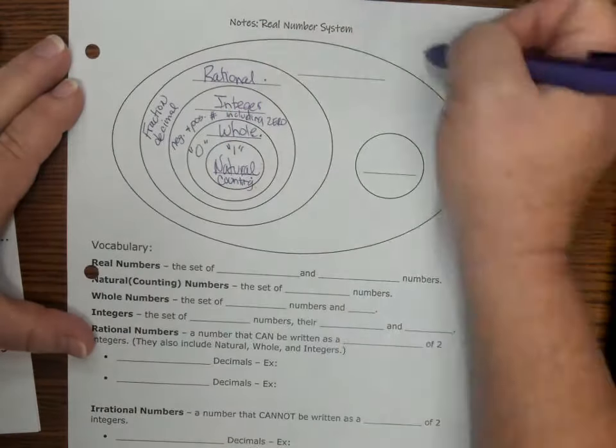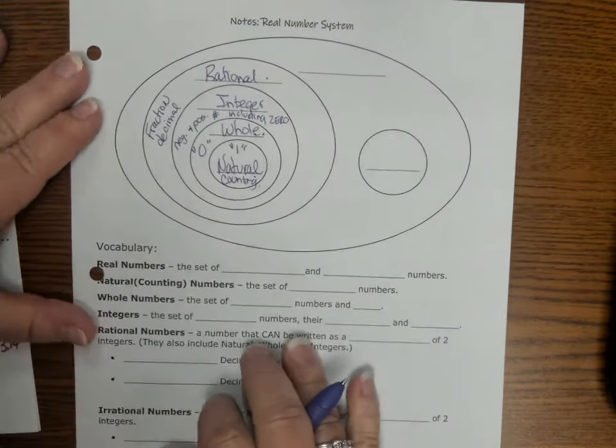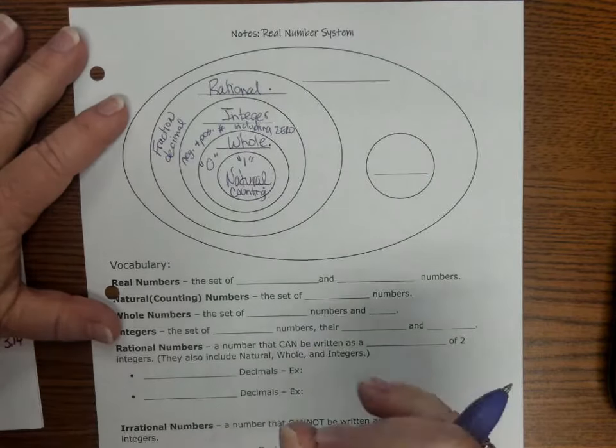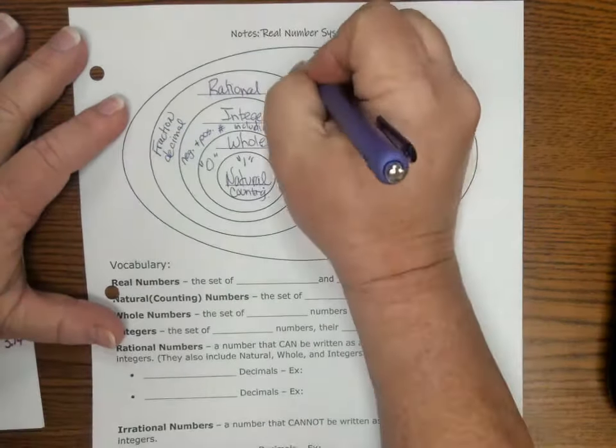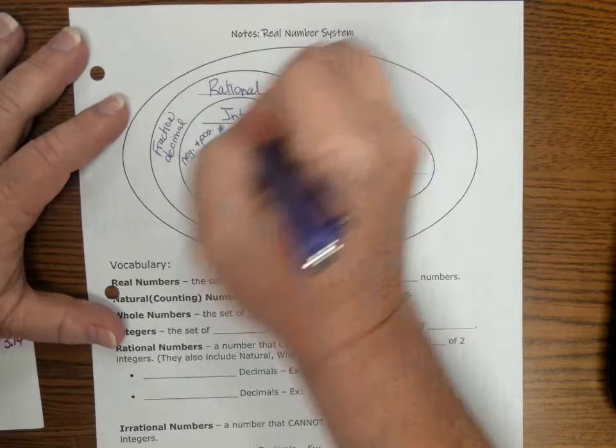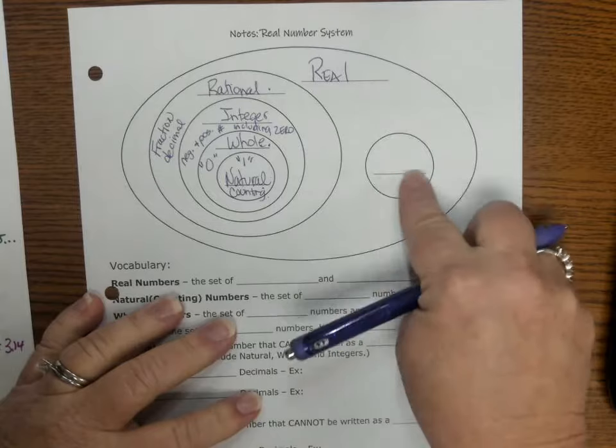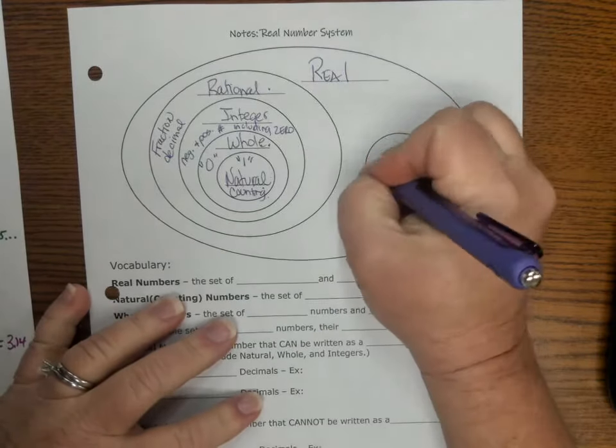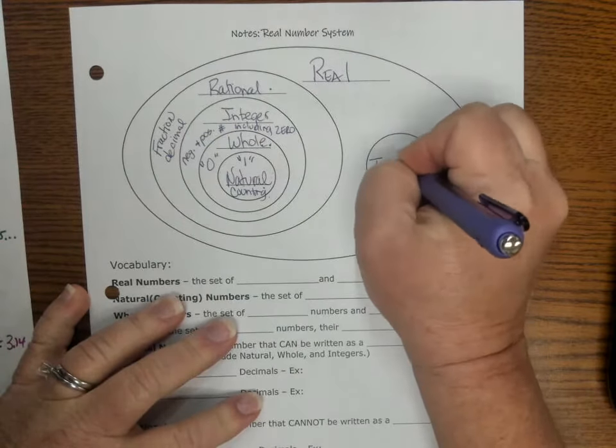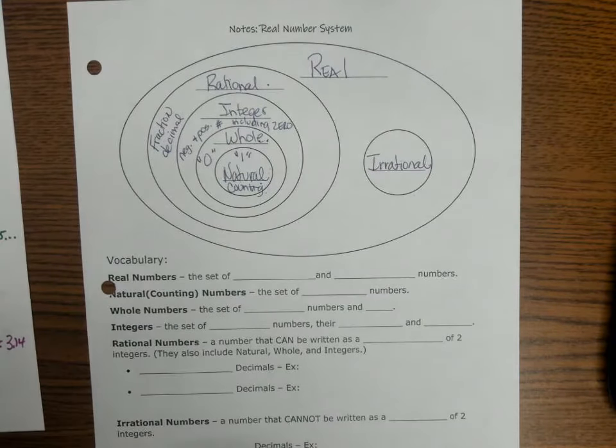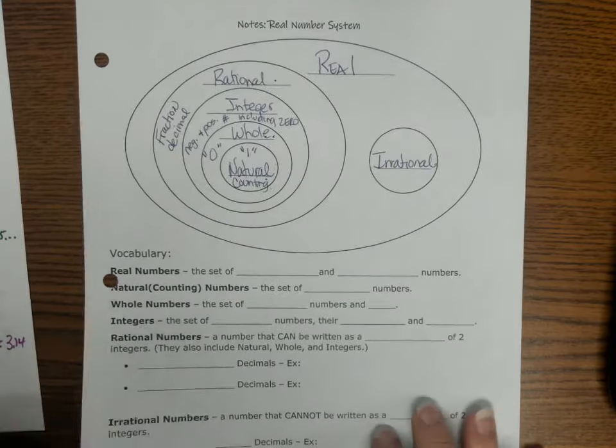All the numbers that you're going to know about in eighth grade, and until you get to Algebra 2, you'll find out there's imaginary numbers, are called the real number system. And this year, you get to learn about this set of numbers over here called irrational numbers. Irrational numbers, I call them irritating numbers.